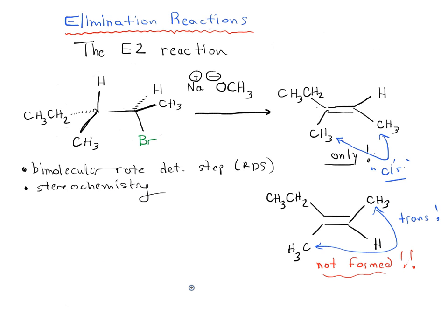Here's the mechanism for how the E2 reaction works. We're going to take our base, CH3O minus, and this base is going to take a proton from this carbon. So it's going to form a bond between oxygen and hydrogen. At the same time, we're going to break carbon-hydrogen and we're also going to break carbon-bromine. We would be doing three arrows all at the same time. See how both the base and the substrate are involved in this step, so this is bimolecular.